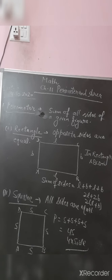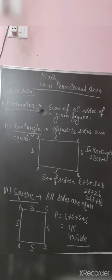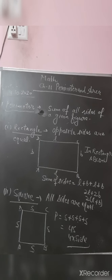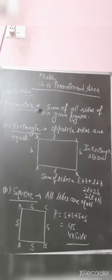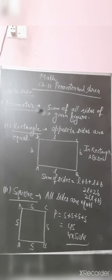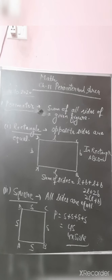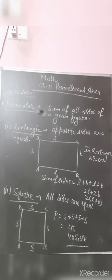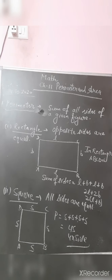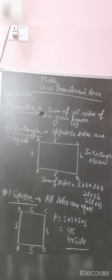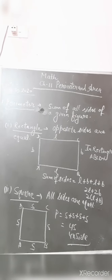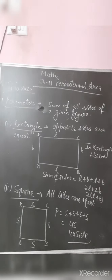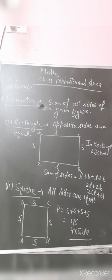First of all I will tell you what is the perimeter. Perimeter is the sum of all sides of a given figure. Whatever figure is given, you have to find the sum of all its sides. By doing the sum of all sides of a figure, some formulas are there that you have to understand how they are derived.